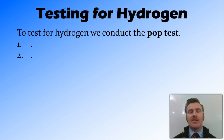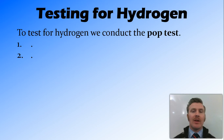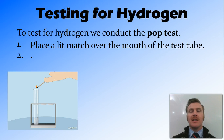When this reaction occurs, a hydrogen gas is produced. Now to prove or to test whether this gas is hydrogen or not, we use the pop test. The first part of the pop test is to place a lit match over the top of the mouth of the test tube.